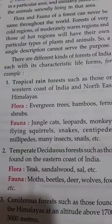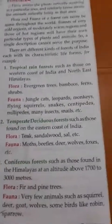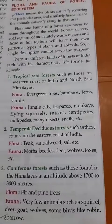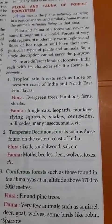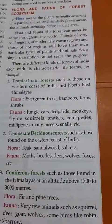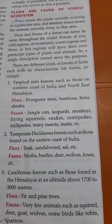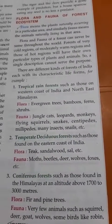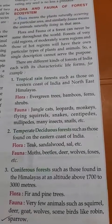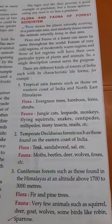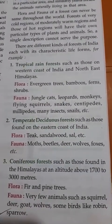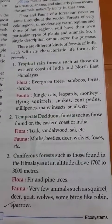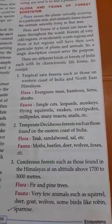Then we have the coniferous forest, found in the Himalayas at an altitude of over 1700 to 3000 meters. The flora includes fir and pine trees. The fauna includes very few animals such as squirrel, deer, goat, and wolves, and some birds like robin and sparrow.